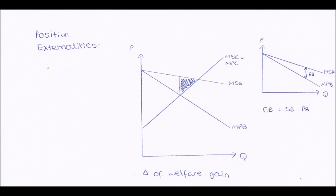Finally, we have positive externality graphs. Here we have lines showing social benefits and private benefits, both sloping downwards from left to right. The distance between them is the total external benefit, so external benefits equal social benefits minus private benefits. Drawing in the social and private costs lines sloping upwards creates a triangle where social benefits are greater than social costs — society is gaining overall. This triangle is known as the triangle of welfare gain.